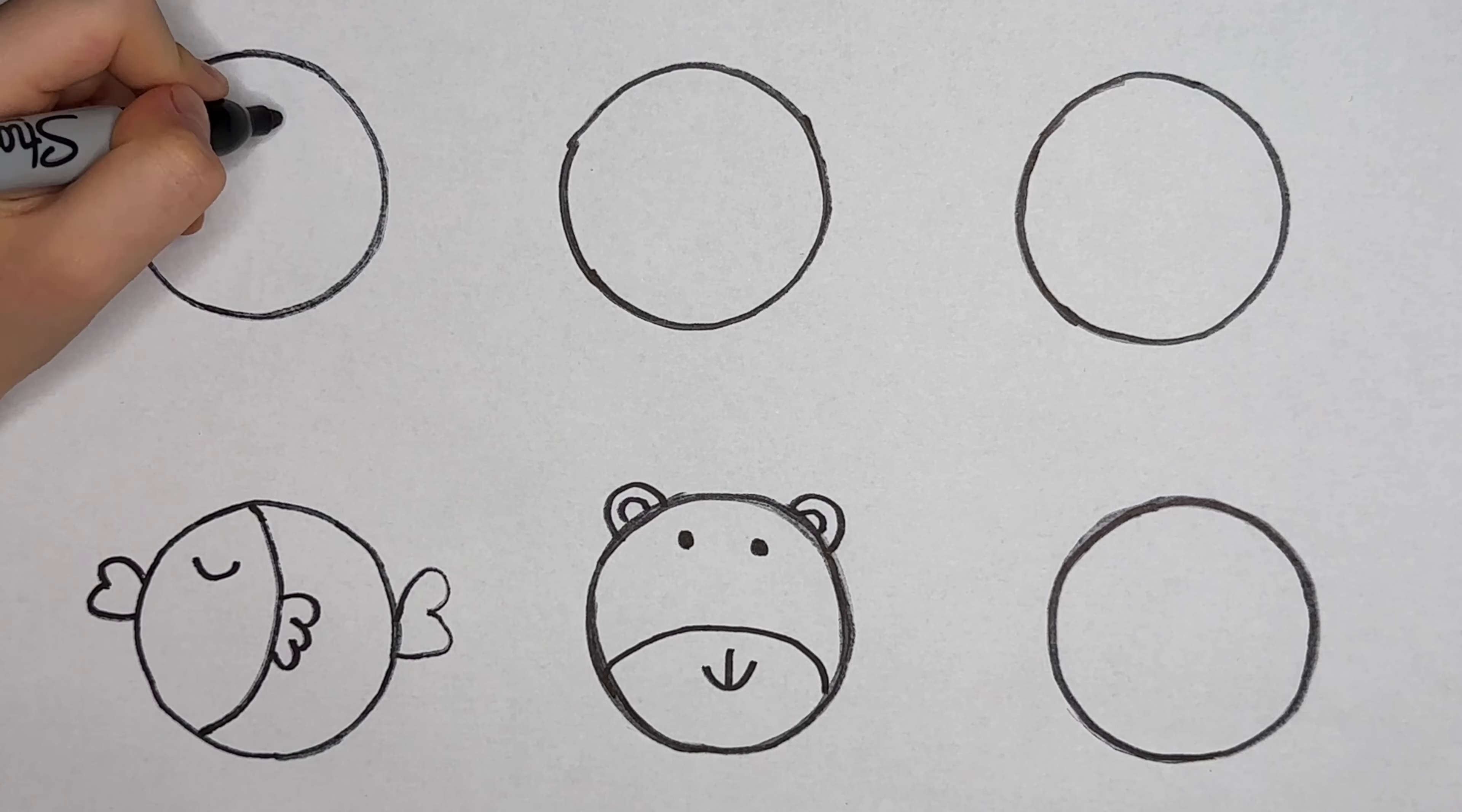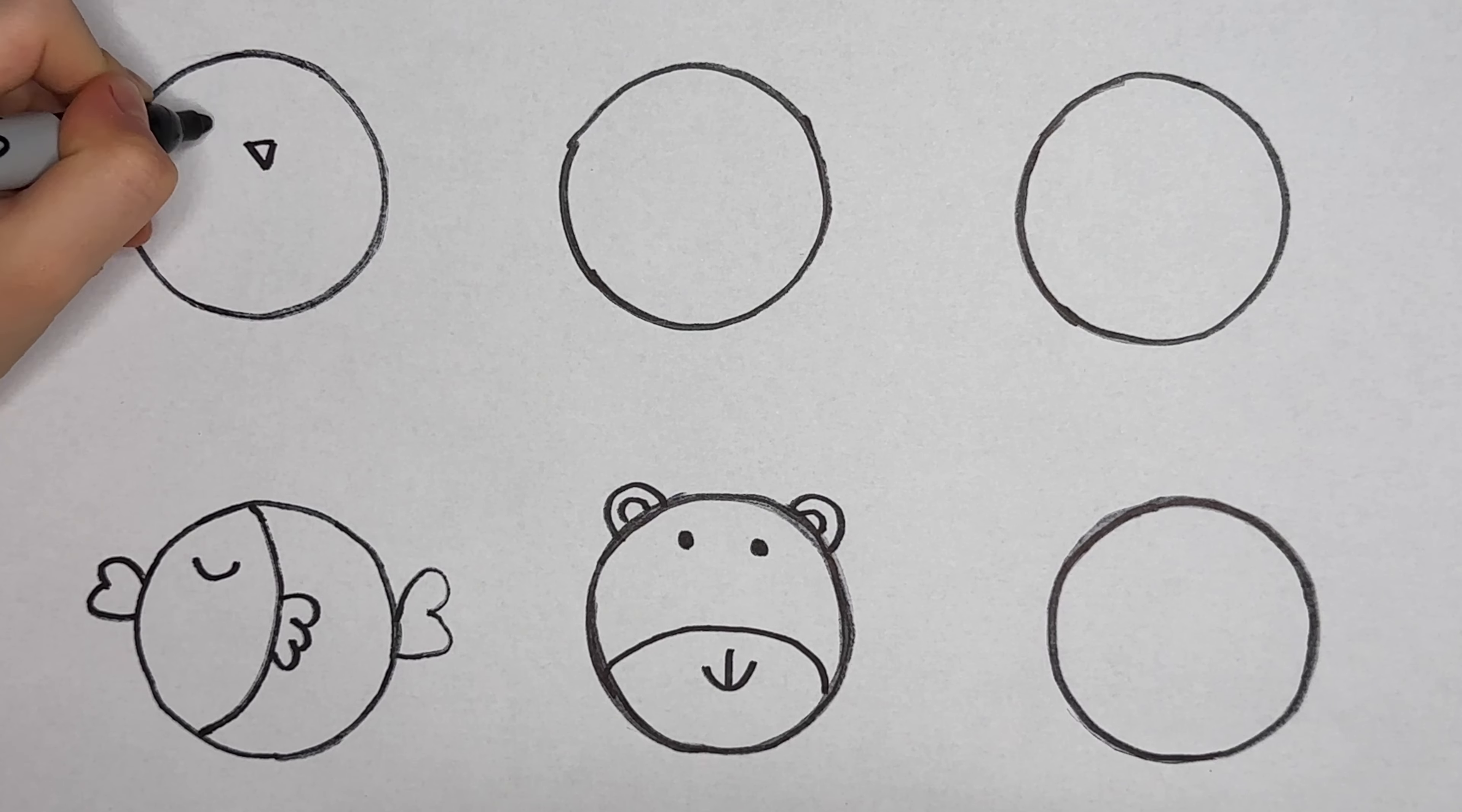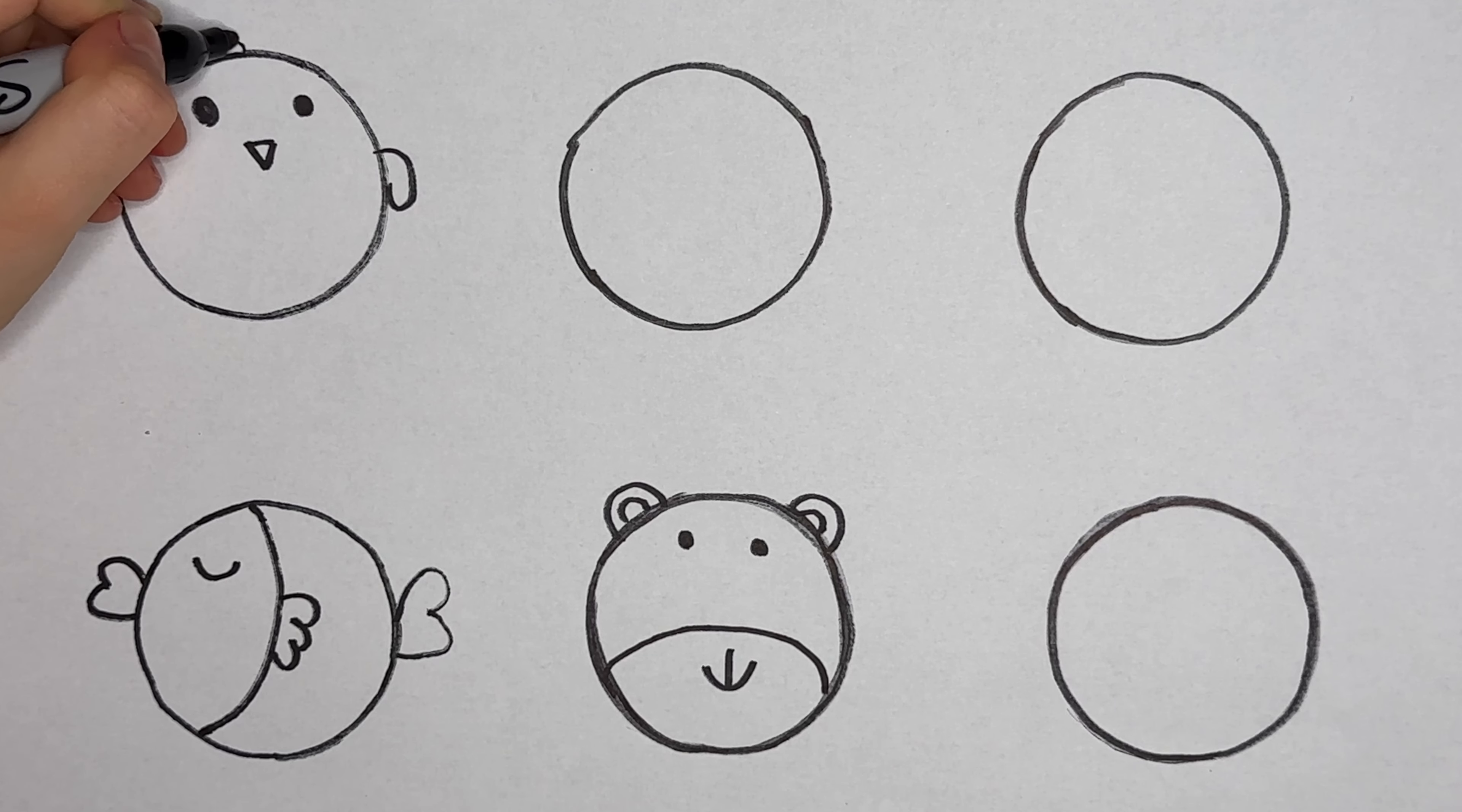The circle is going to be a chick. The mouth is going to be a small triangle. Two small circles for the eyes. Two wings are going to be like this. To make it cuter, let's add details.